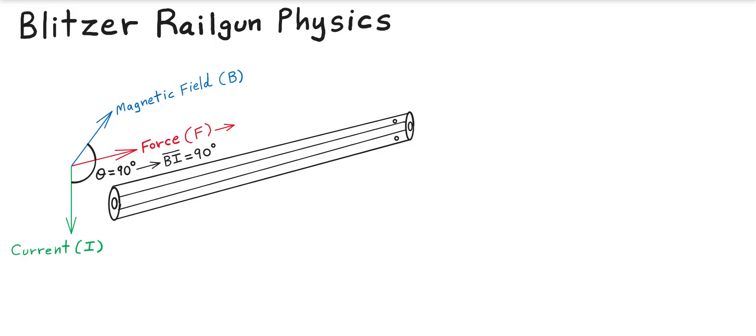The electromagnetic railgun requires an excessive amount of power, but for an extremely short burst of power delivery. We can quantify our force vector as the function of the current times the length of the current-carrying conductor times the magnetic field, and its angle of perpendicularity — in this case we use sine theta — so it is the perpendicular plane of I and B.